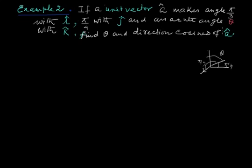And theta with k cap. So we have to find the value of theta and the direction cosines of a. As you know, the unit vector a makes angle pi by 3, so we take cos alpha, which is called L, and it's given as cos pi by 3, which is cos 60 degrees, and the value is half.